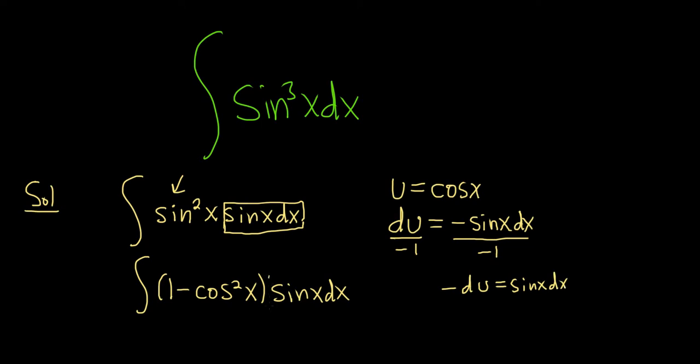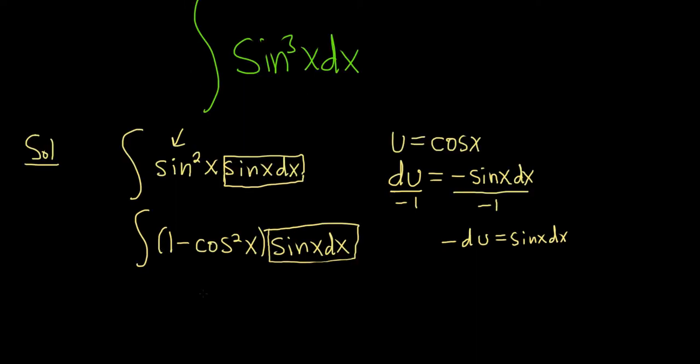So now we can replace sine x dx with negative du. So this will be negative integral 1 minus, and then cosine was u, so u squared, and then we have our du. Yep, because this is negative du, so everything looks good.